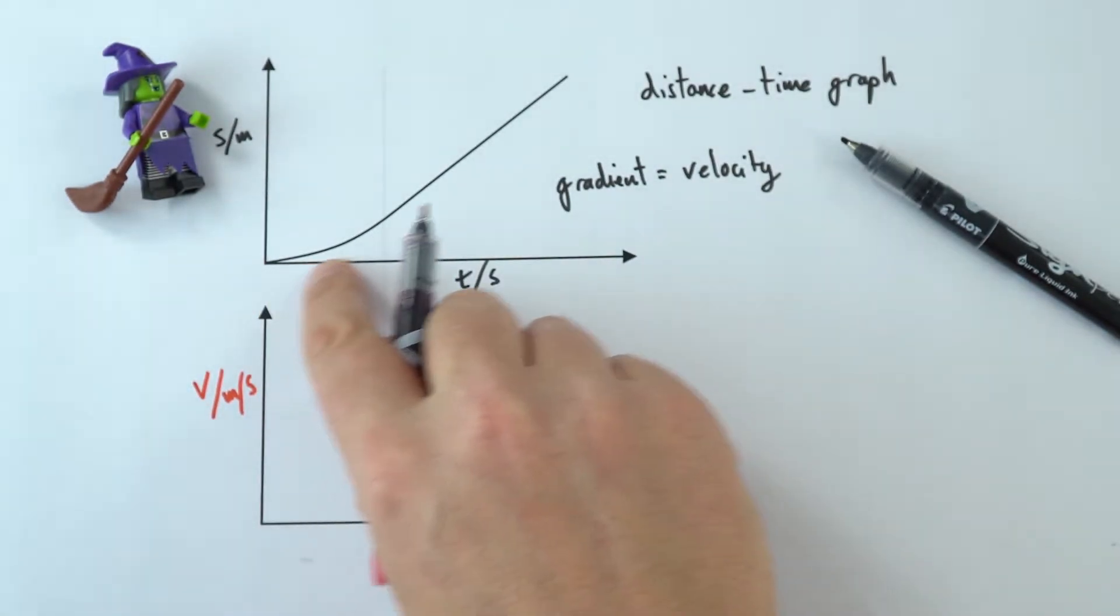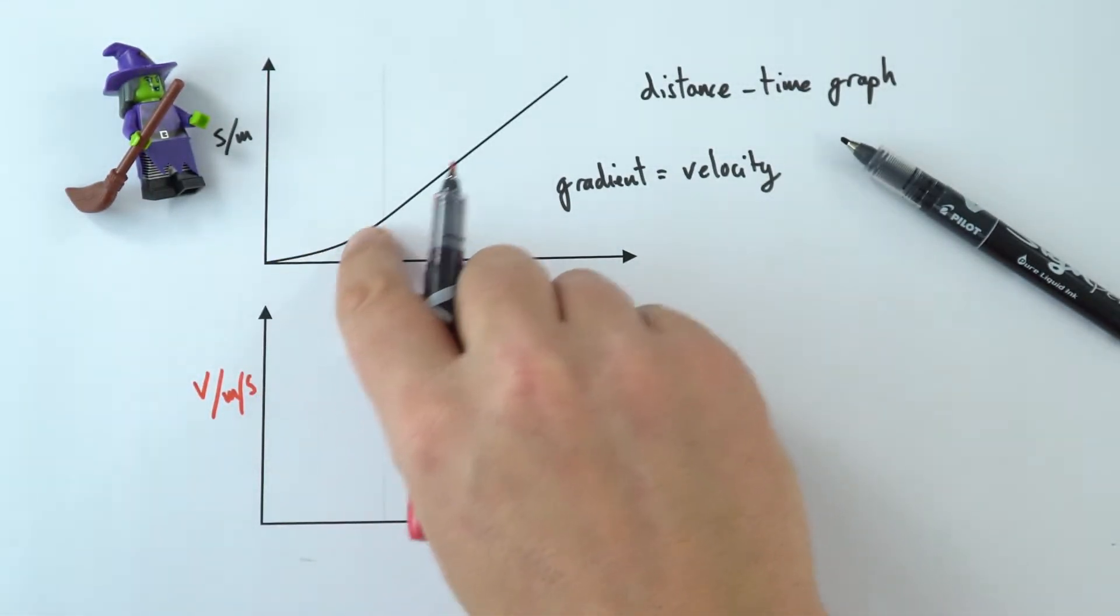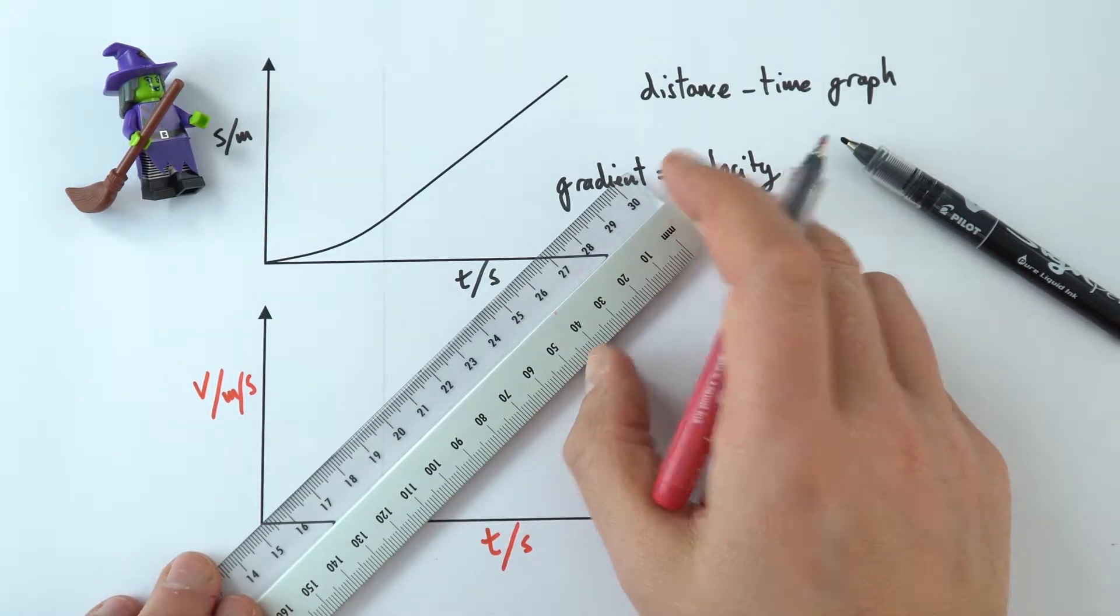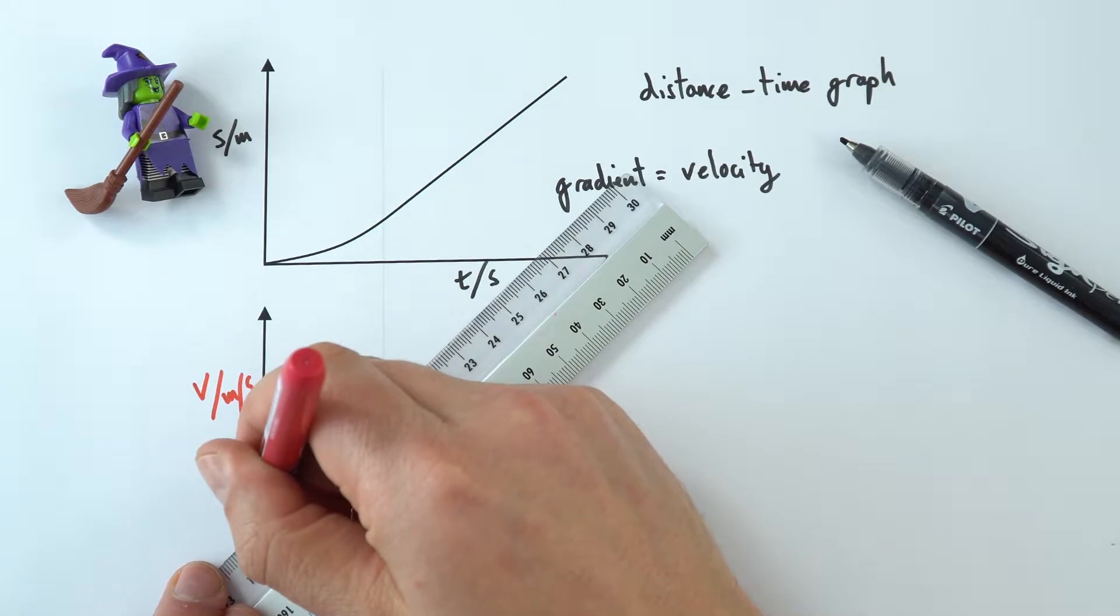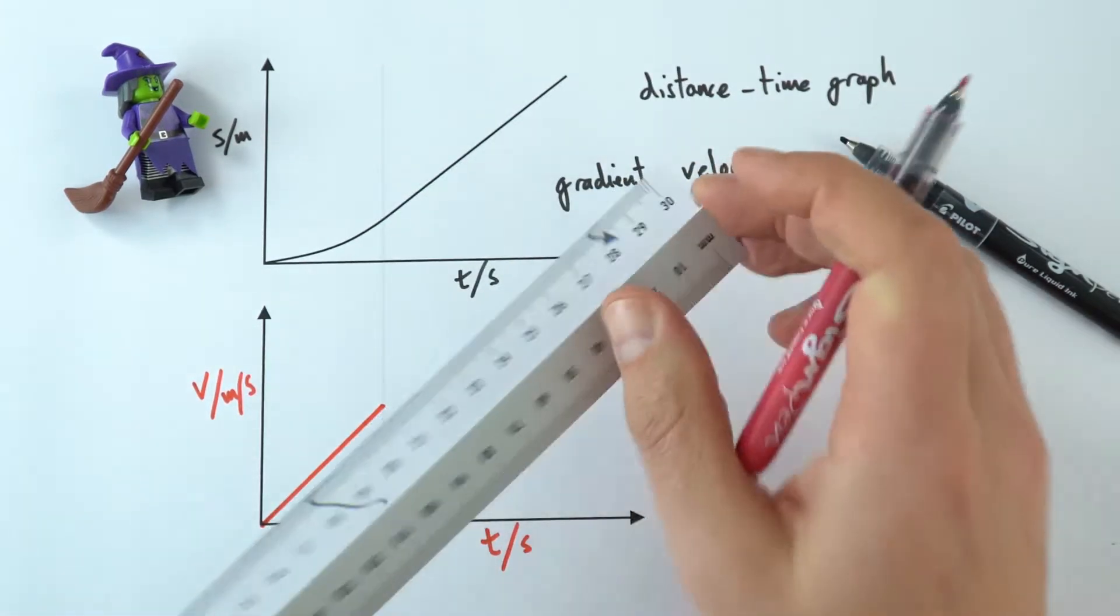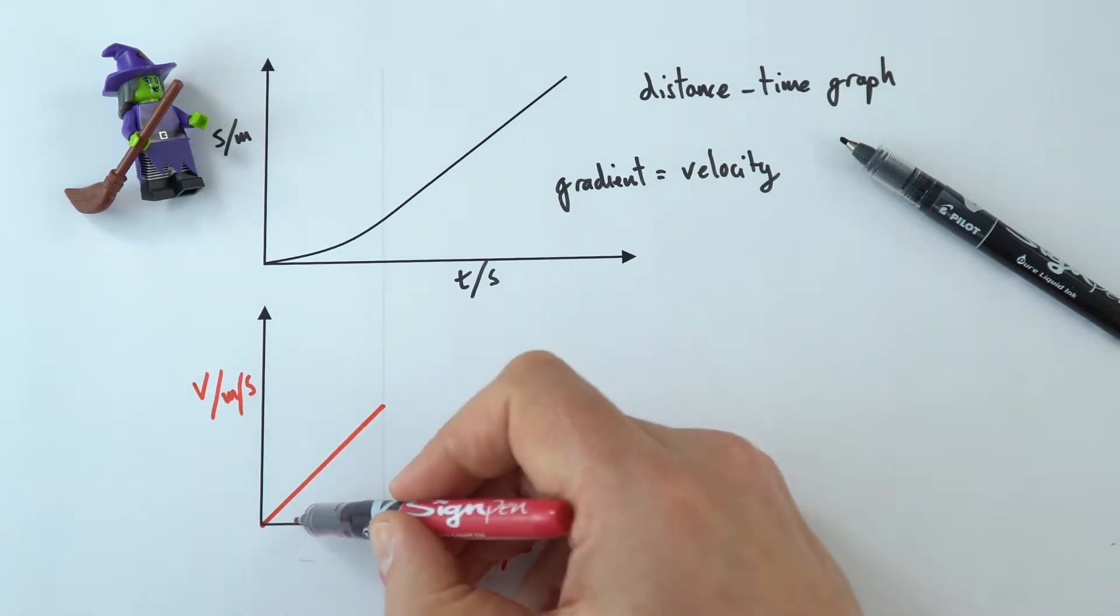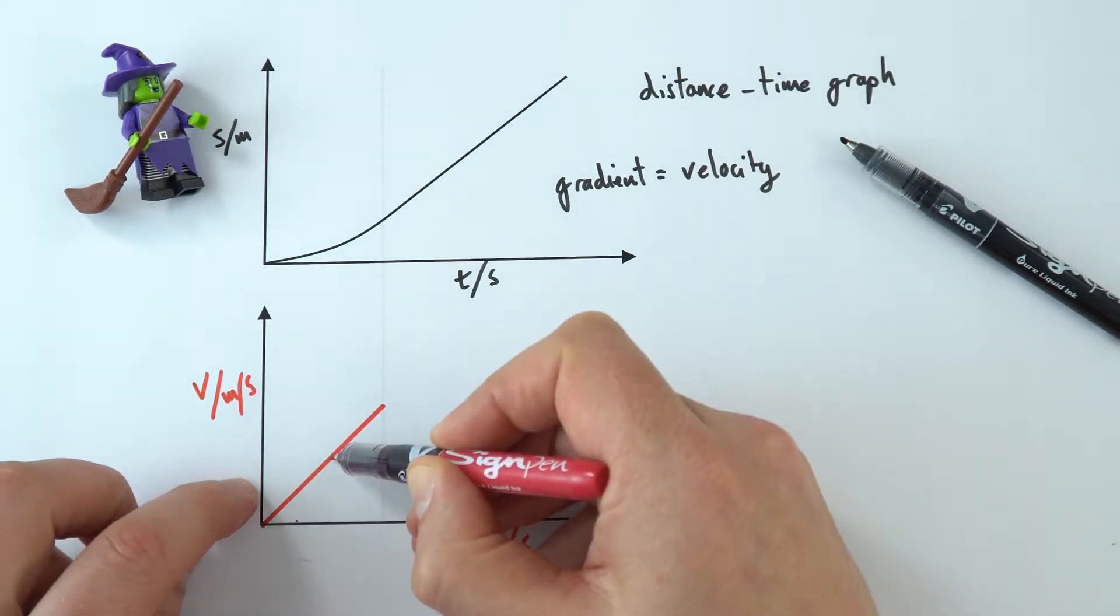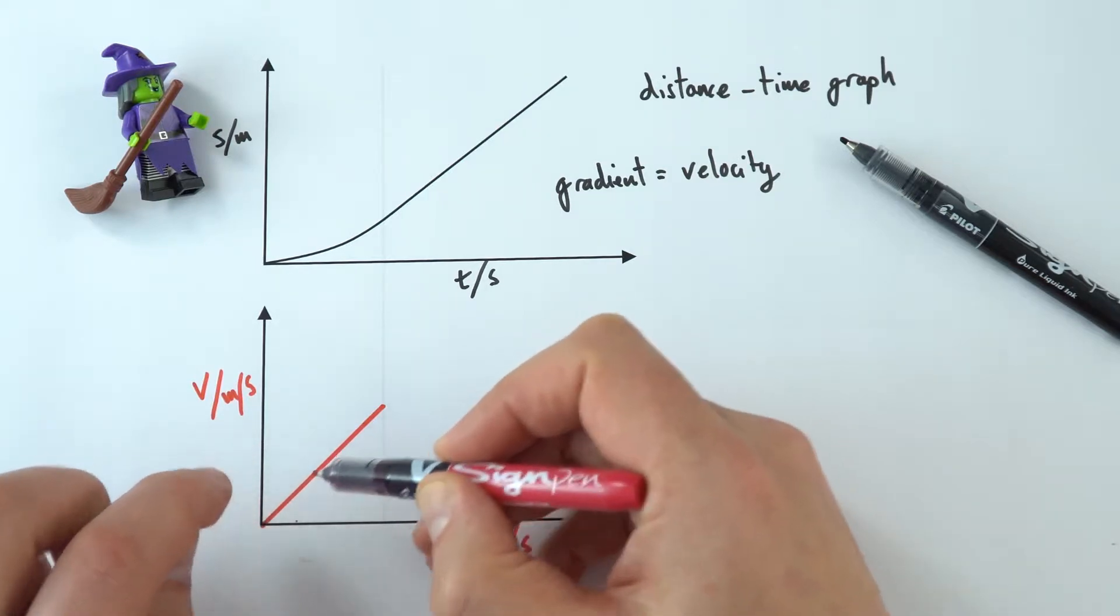Now because we've got a sloping line upwards here, that means there's an ever-increasing velocity. And if this is increasing at a constant rate, what we'd get on the velocity-time graph is a straight line that's going up. So that represents an increase in velocity. Effectively, at this time they're traveling at a certain velocity. A small amount of time later, their velocity has increased. So we've got an increasing velocity.